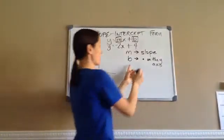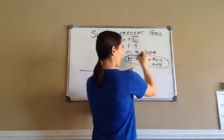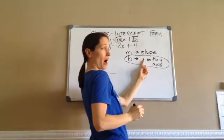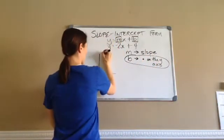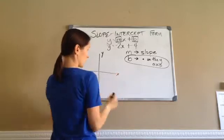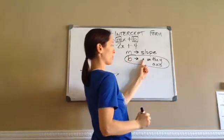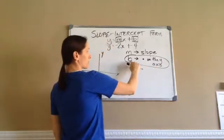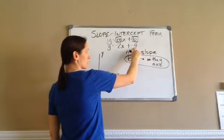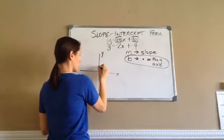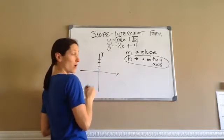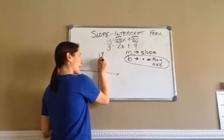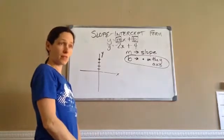You're going to start with b. Where you place the dot on the y. Remember, this is y. This is x. b is where you place the dot on the y-axis. What is my b? 4. So, 4 on my y-axis is right here. See how I did that?